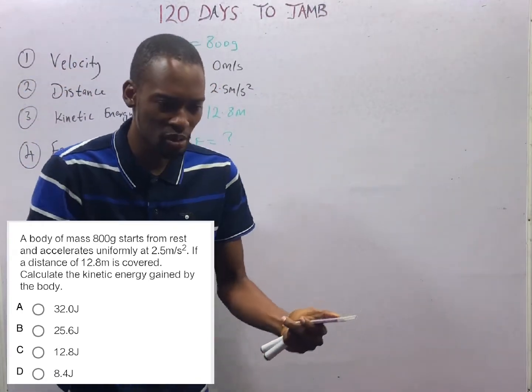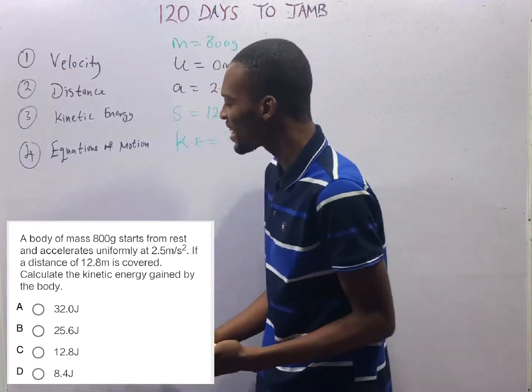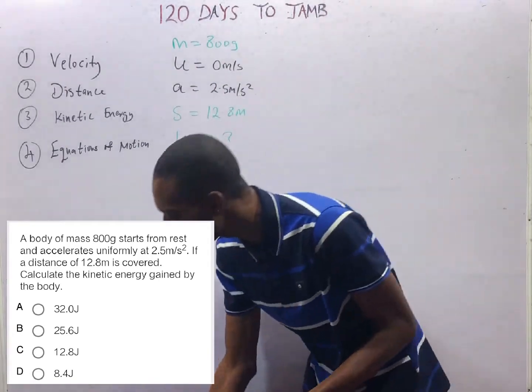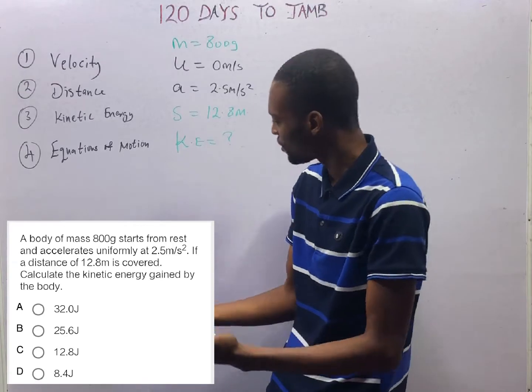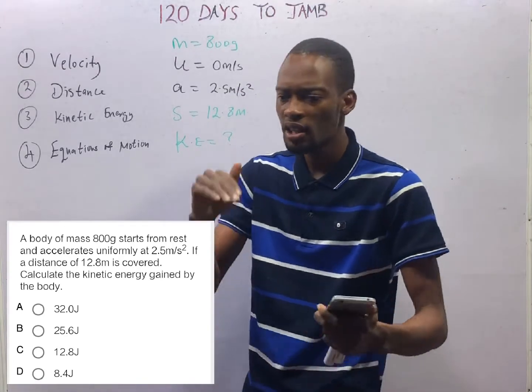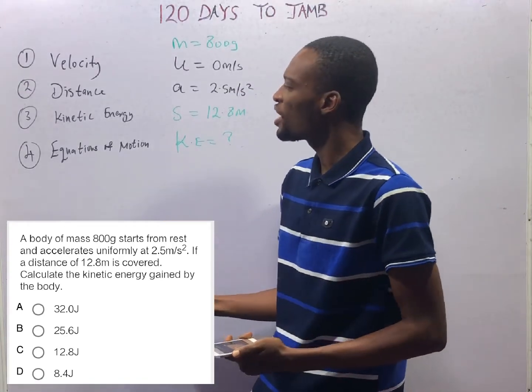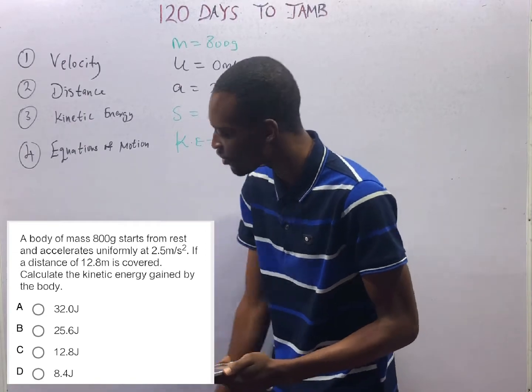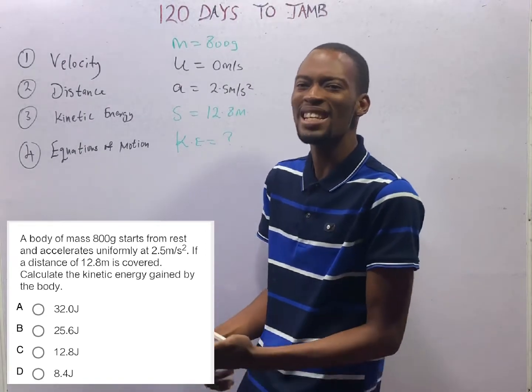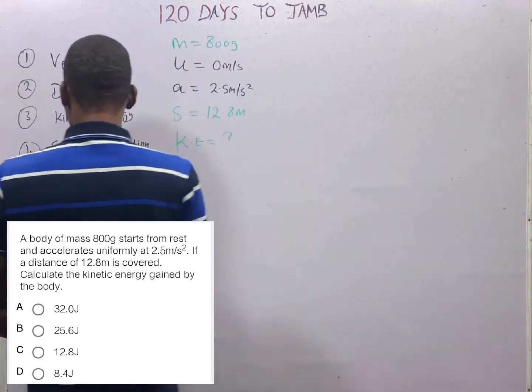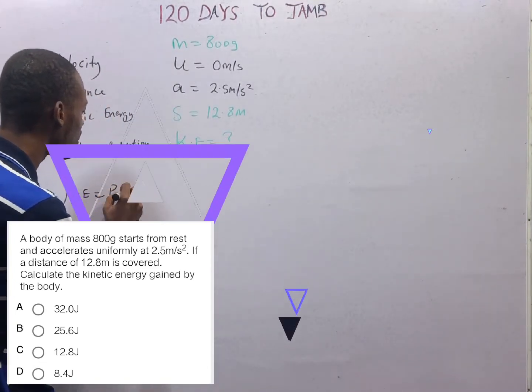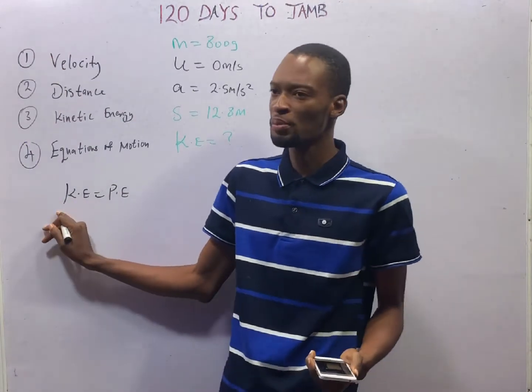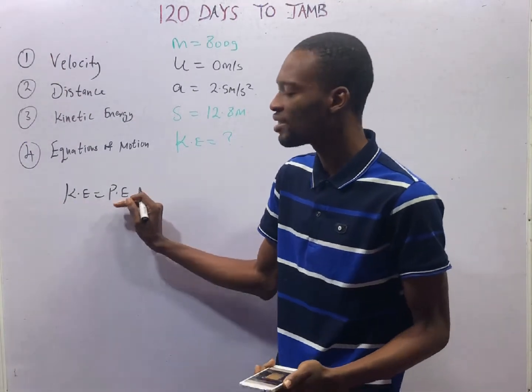And potential energy is the energy a body or object possesses due to position or due to their height. And anytime you are told to find the kinetic energy just before the object hits the ground, it simply means that kinetic energy is equal to potential energy.